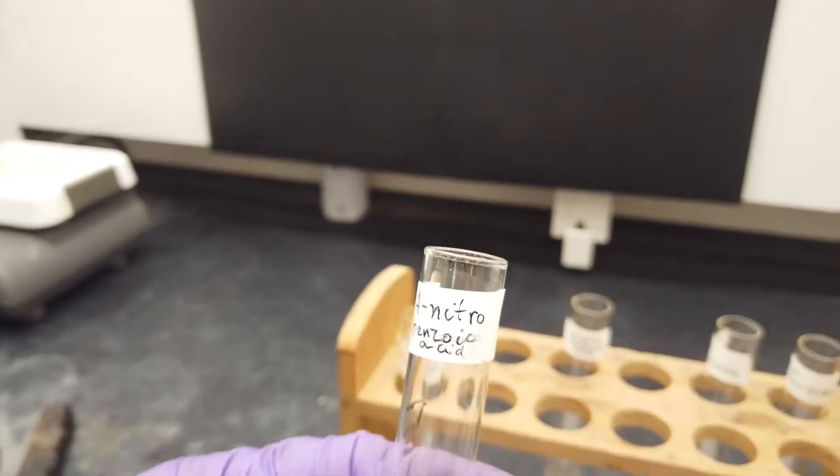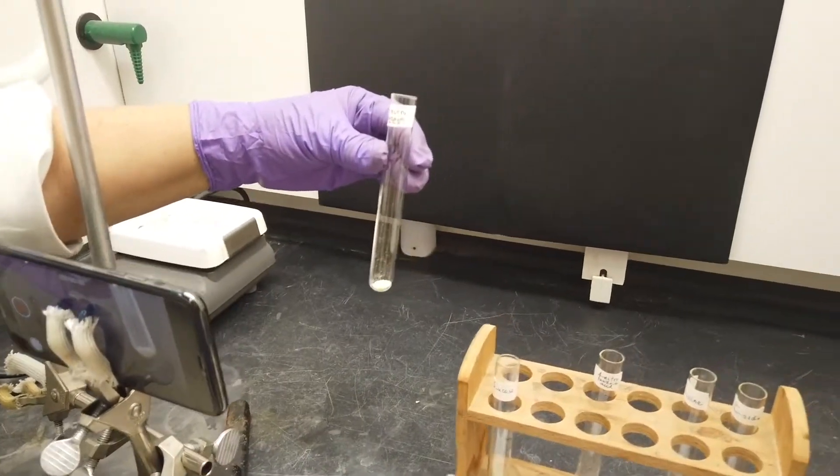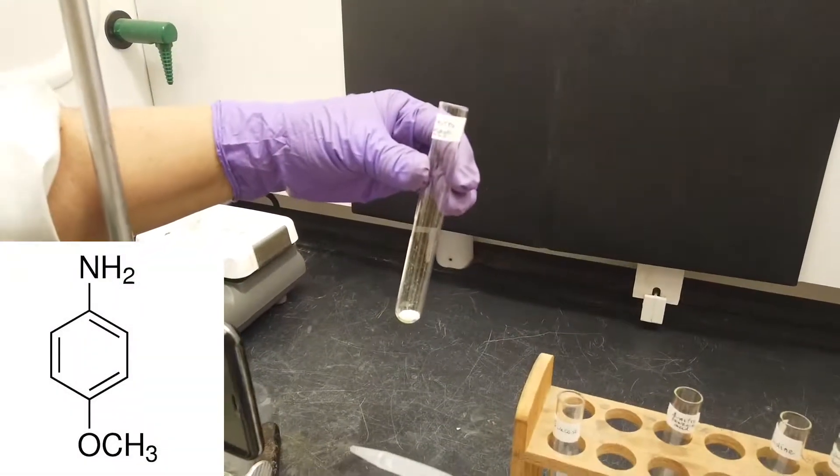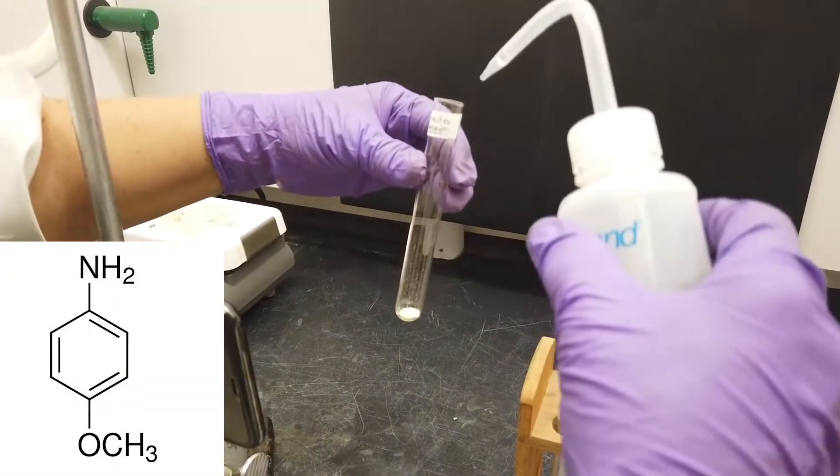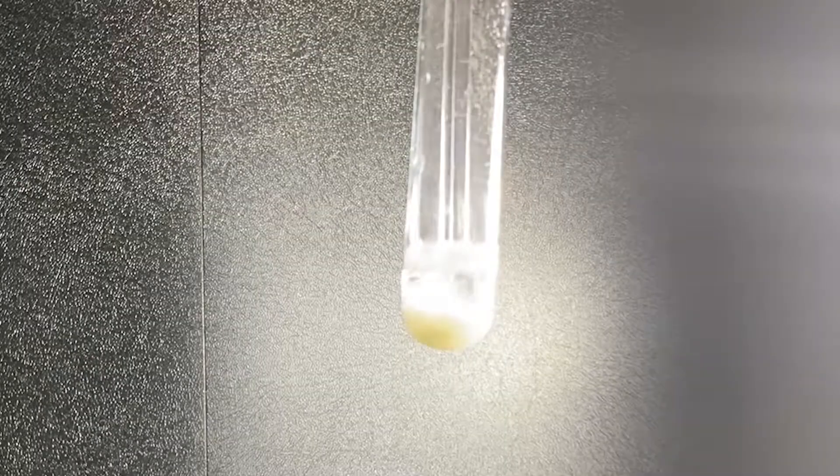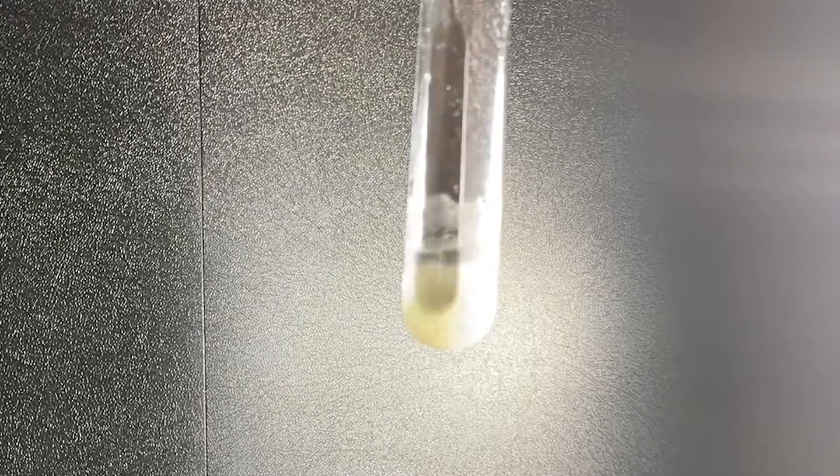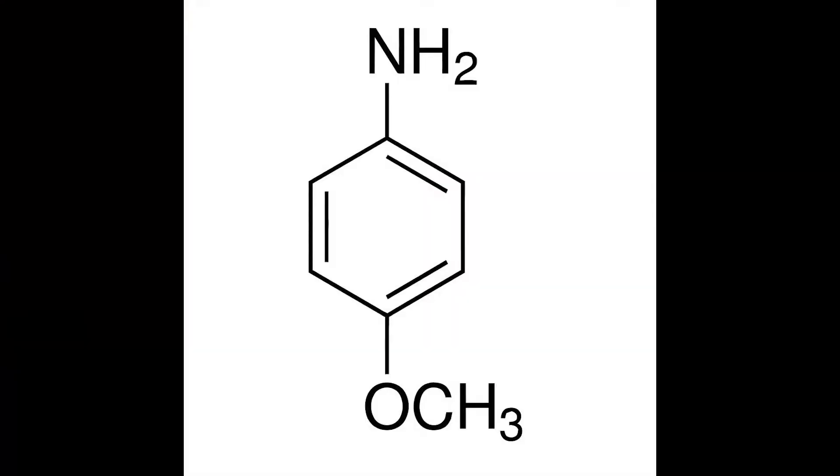The next substance we are looking at is 4-nitrobenzoic acid. First, we'll see its solubility in water. Take a look at its structure and guess if you think it will be soluble or not. After stirring, we can see that it is not soluble in water. This begs the question, what can we do to make it soluble in water?